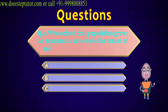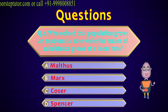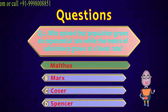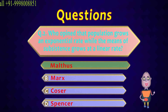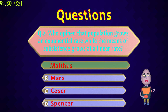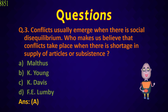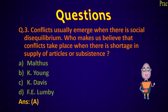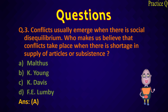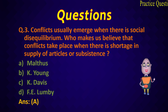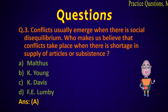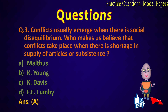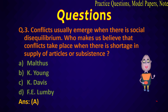Second question: who opined that population grows at an exponential rate while the means of subsistence grows at a linear rate? This was given by Malthus, who talked about exponential population growth while food grows at a linear rate that cannot match population growth. Last question: conflicts usually emerge when there is social disequilibrium. Who makes us believe that conflicts take place when there is a shortage in supply of subsistence? This is given by Malthus — when people do not get the bare minimum and there is a shortage of supply due to rising population, conflict will arise.